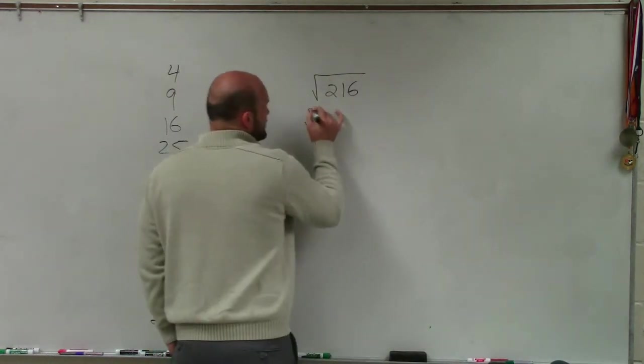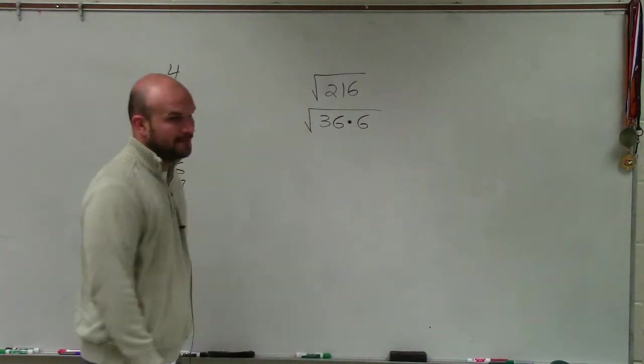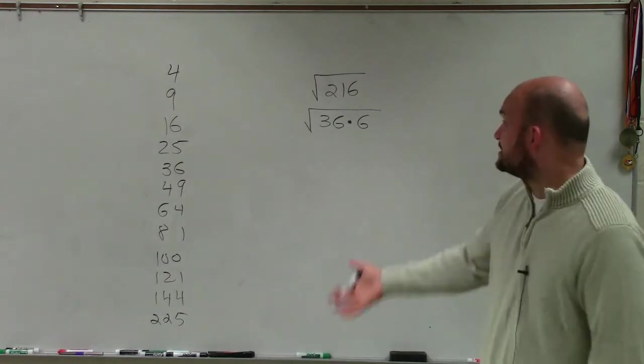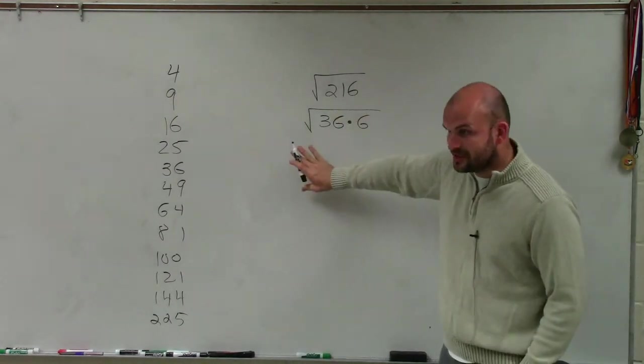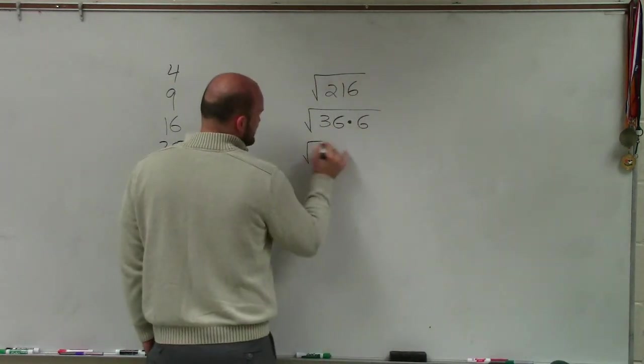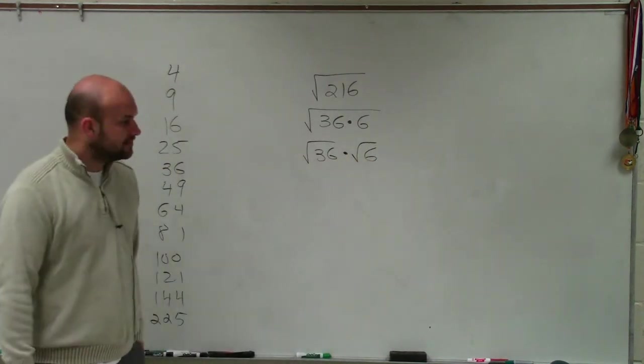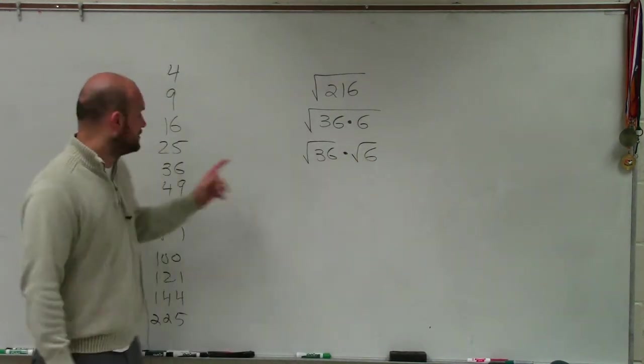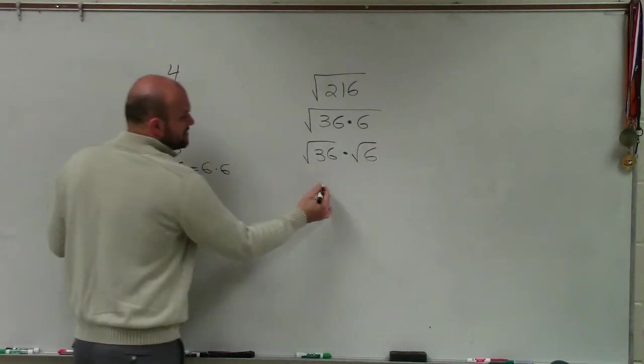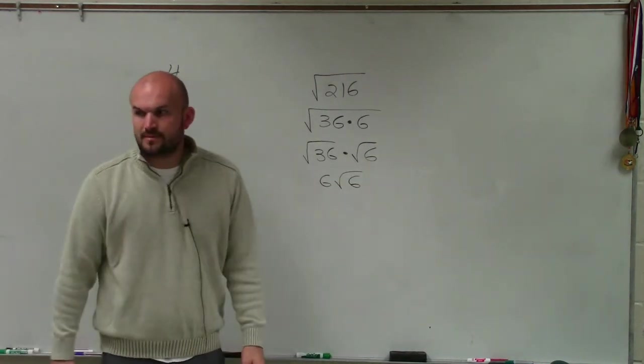And if you want to check this with your calculator, I can rewrite this as a product of 36 times 6. So if you want to check in your calculator, you can check. 36 times 6 equals 216. But what's nice about this is because now, since I broke this up as a product, we can now rewrite this as the square root of 36 times the square root of 6. And then the square root of 36 we know is 6 times 6, which is the square root of 36 means it's just going to be 6 square root of 6. And that's how you do that one.